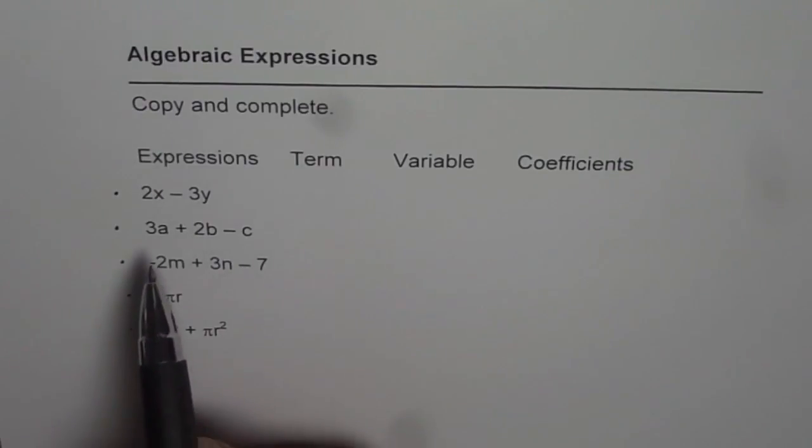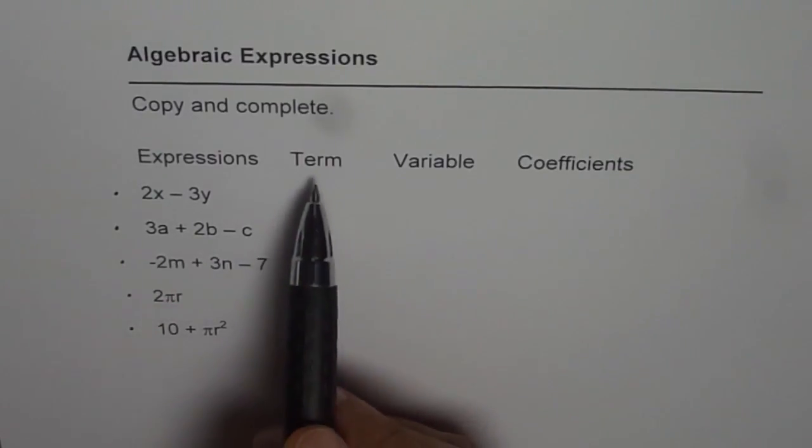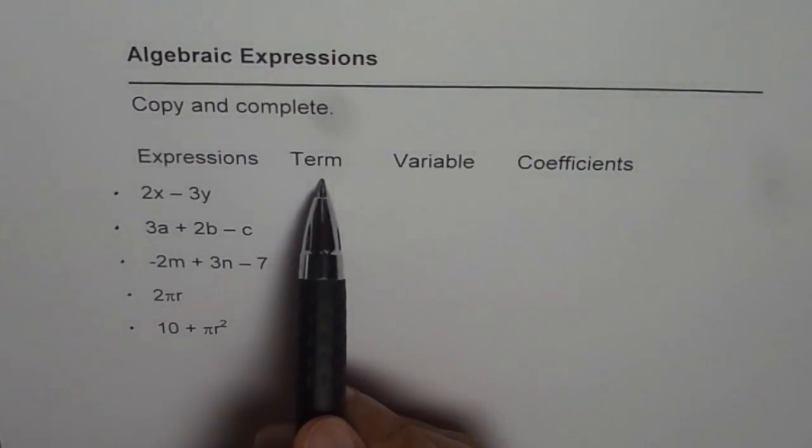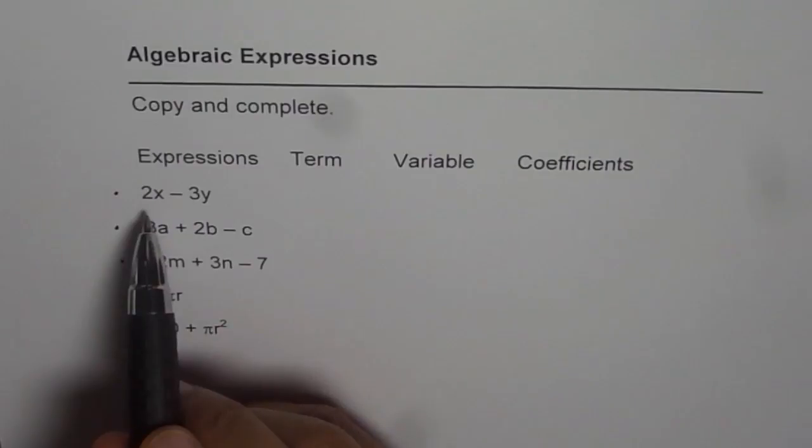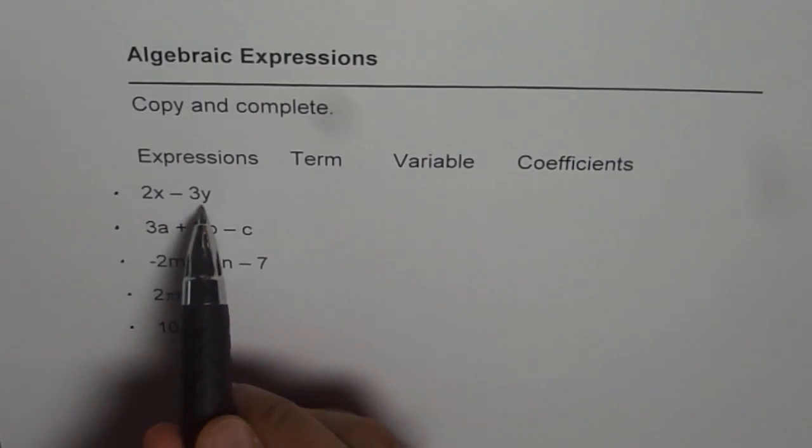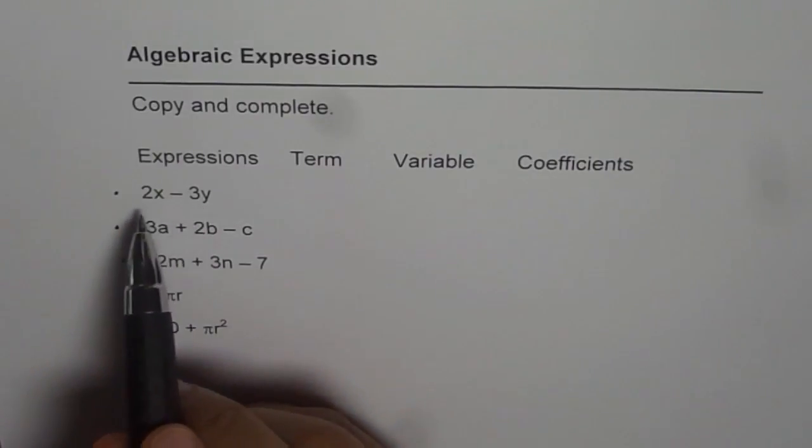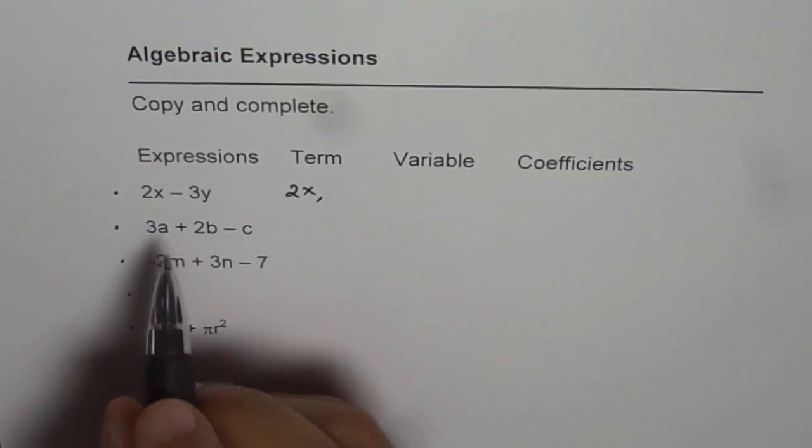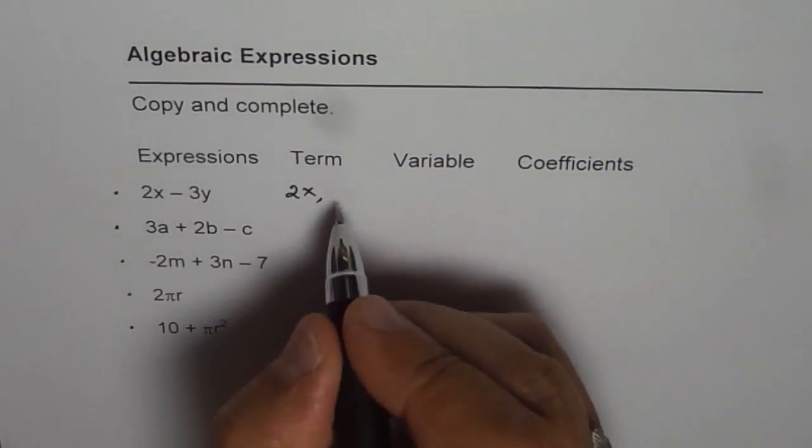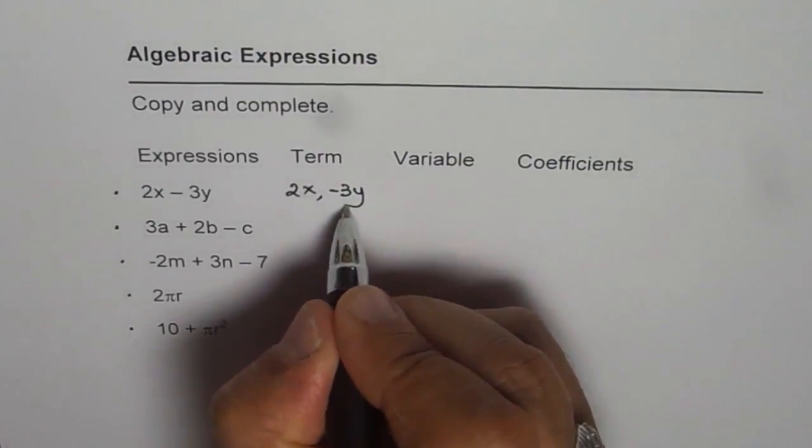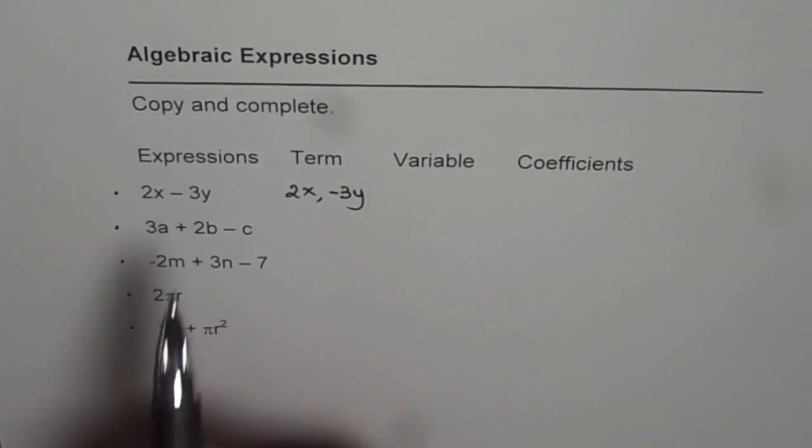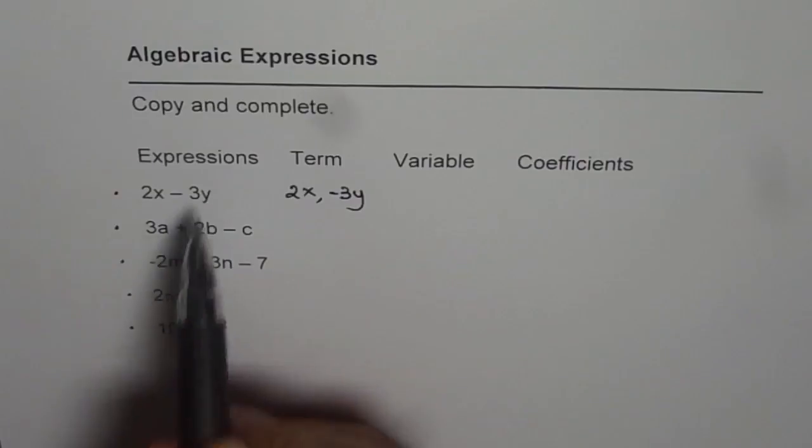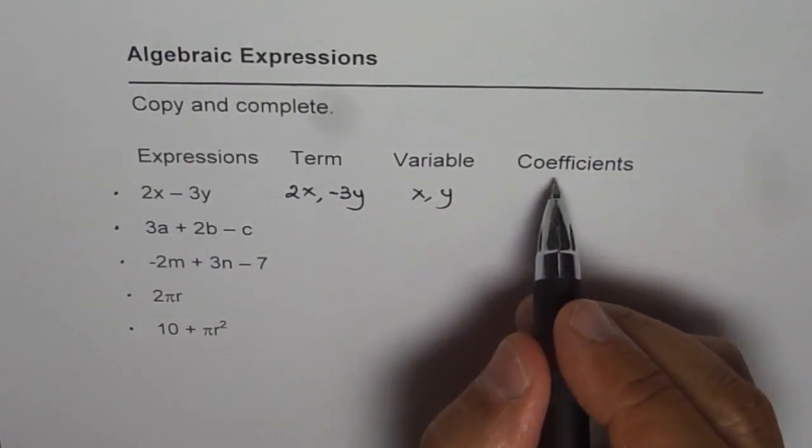Now in any expression there are a number of terms. So in the first column we have to write down the terms themselves. The first expression 2x minus 3y has two terms. The first term is 2x, let us write it down, and the second term is minus 3y. Now the variables are x and y.